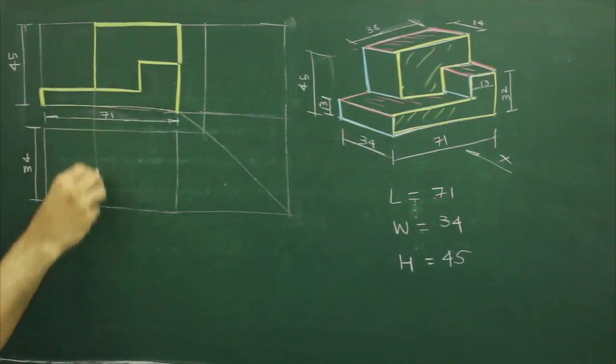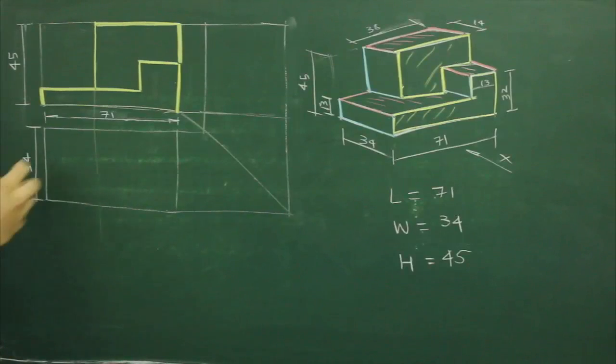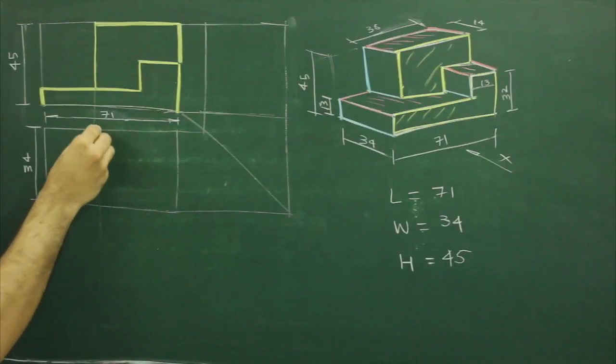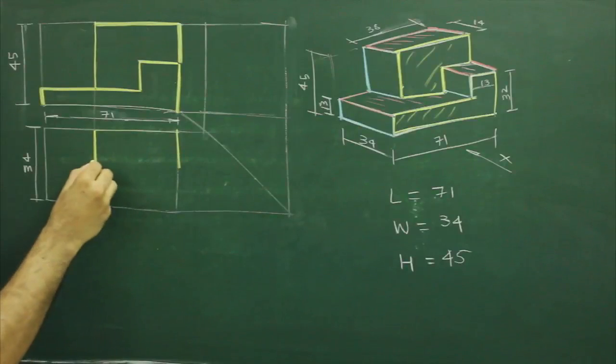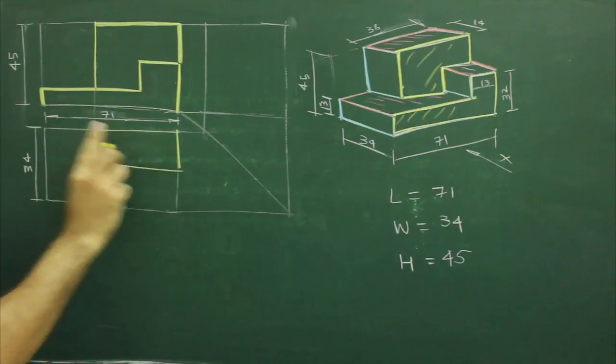To draw that, we can project from front view. We can mark this height as 14, this is 38, 14 and we can join this. So first block is done.